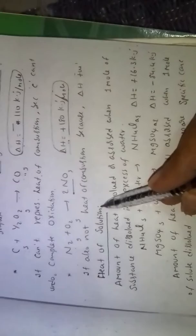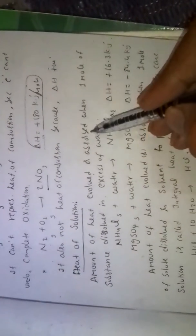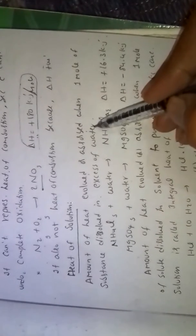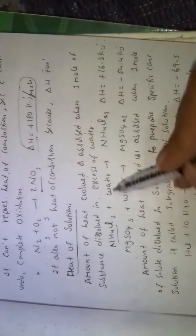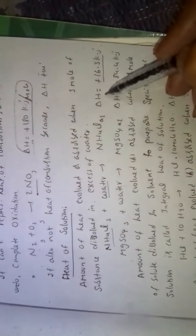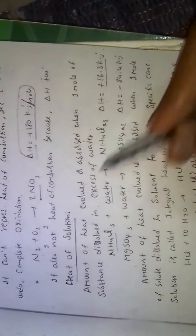Heat of solution. Amount of heat evolved or absorbed when one mole of substance dissolved in excess of water. For example, NH4Cl dissolved in water, delta H value positive. Here delta H is known as heat of solution.